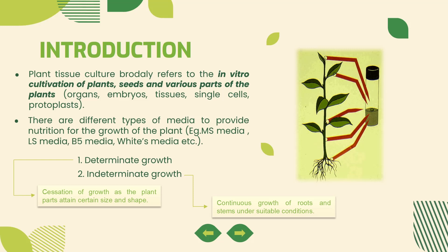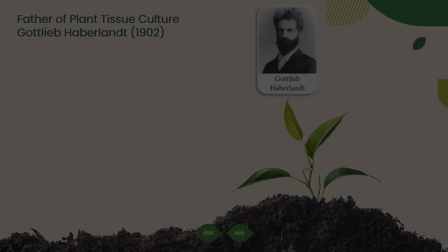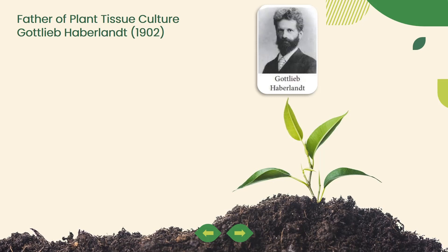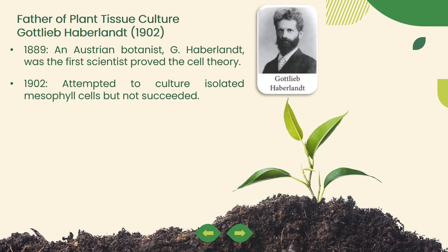Who is the father of plant tissue culture? The answer is Gottlieb Haberlandt. He was an Austrian botanist who first attempted to culture plant cells in 1902. Although his attempt was a failure, he is still regarded as the father of plant tissue culture.